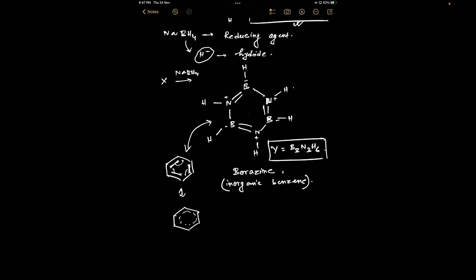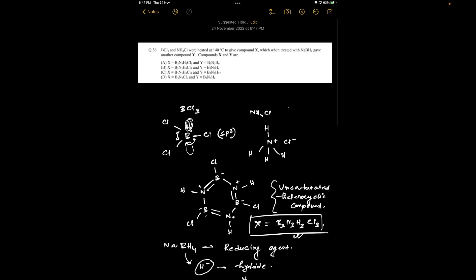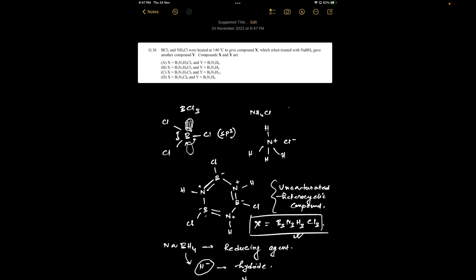In borazine, unlike benzene, the B–N bond is polar because boron carries a partial positive charge and nitrogen a partial negative charge — there is an electronegativity difference between boron and nitrogen. Also, the three π bonds in borazine cannot fully delocalize as in benzene. So borazine is more reactive than benzene. The correct answer for both X = B₃N₃H₃Cl₃ and Y = B₃N₃H₆ is option A.